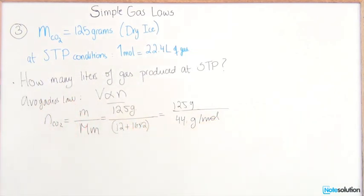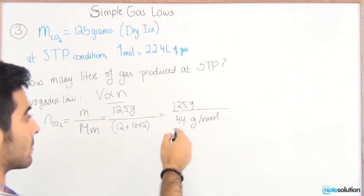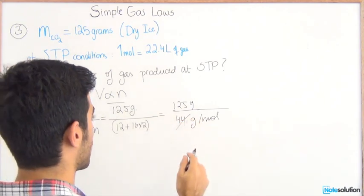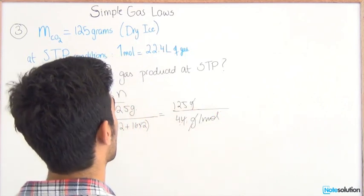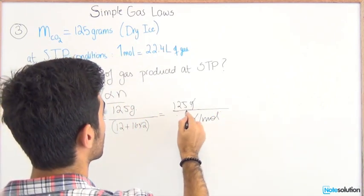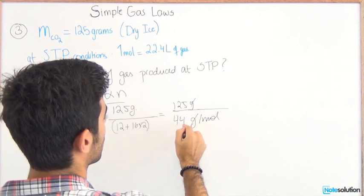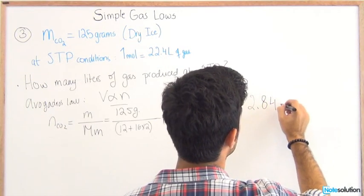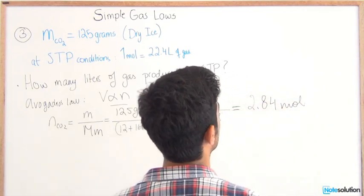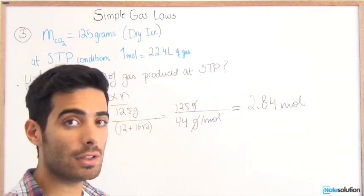We do the calculations. We cancel off the grams with the grams so we're left with the moles. Now that we've found the number of moles, let's see how many liters would that come up to.